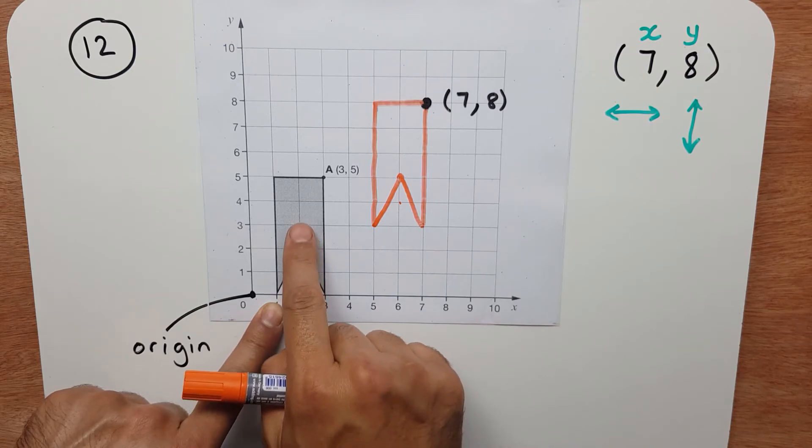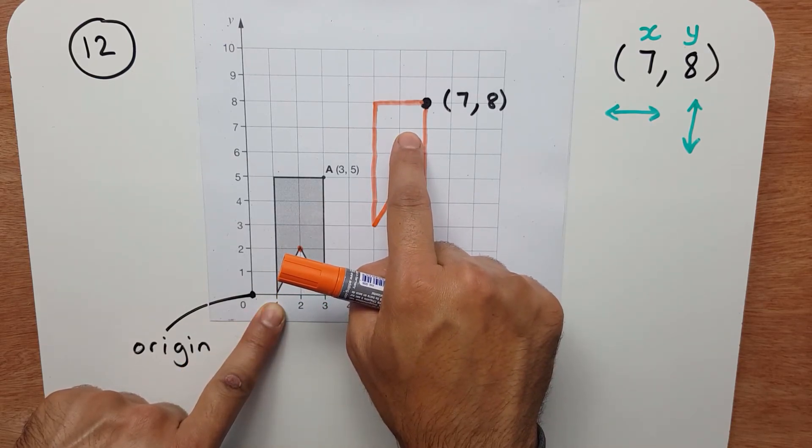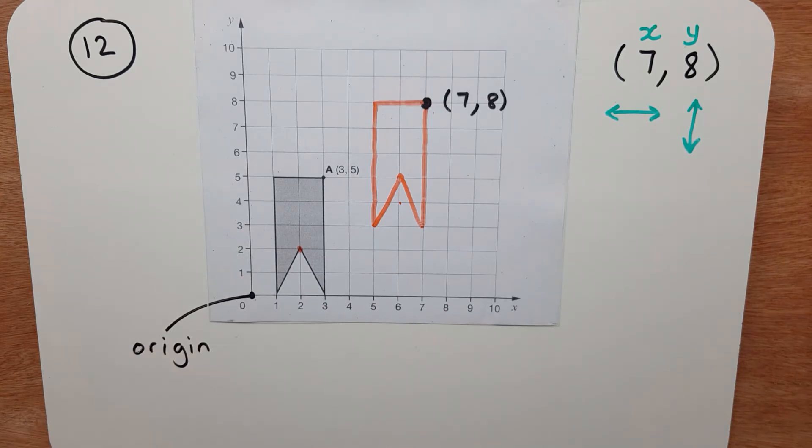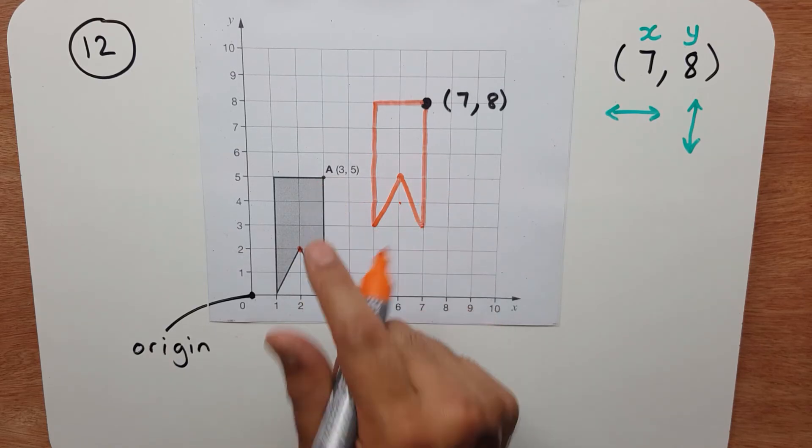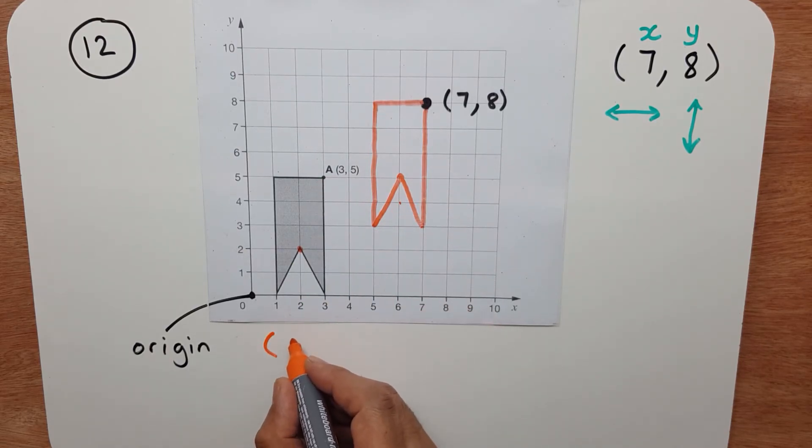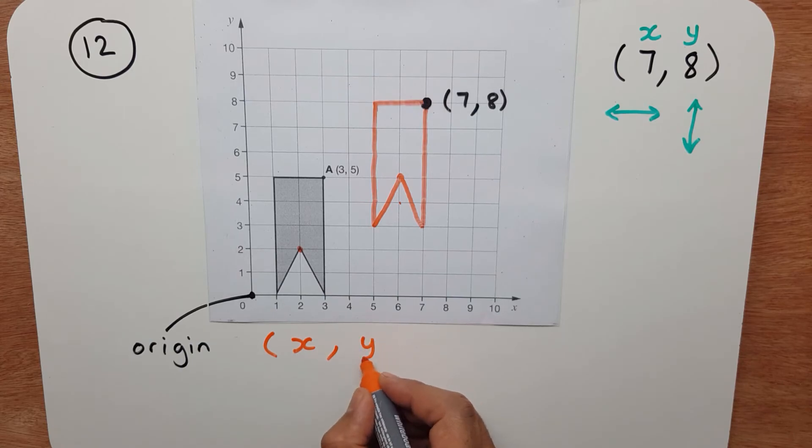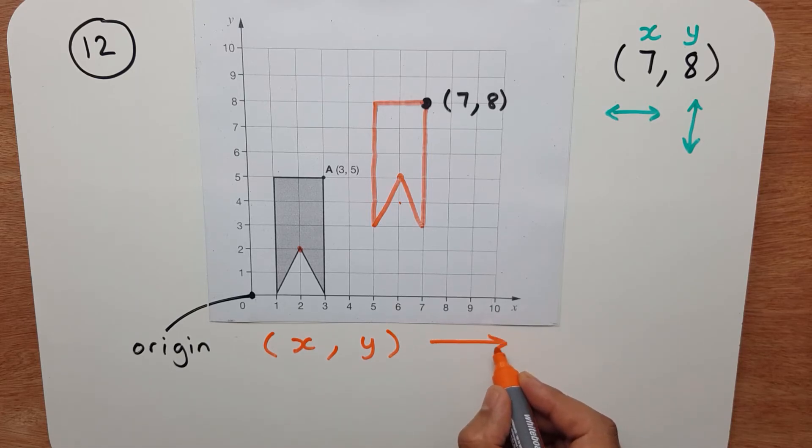So if you can see, that shape has now moved to there, and that's how I draw it there. So what I want you to know, to find the coordinate of this point, you know it's going to have an x-coordinate and a y-coordinate. And x is along the corridor,